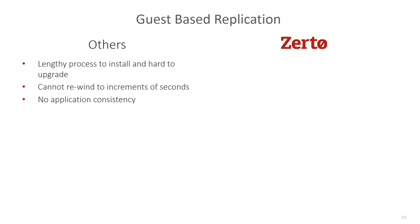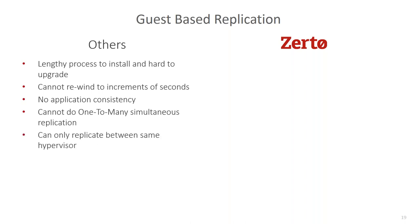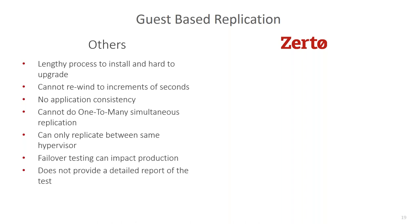Guest-based solutions have no application consistency and no awareness of what's going on outside that individual virtual machine or server. They often can't replicate to many locations from a single VM, and are locked into the same hypervisor in many cases. Failover testing can also impact production for many of the same reasons — pausing protection during a test means replication can't continue during that window. If you do run a test, you get no detailed automated report afterward — you have to track it manually.